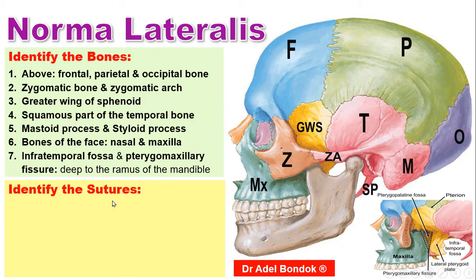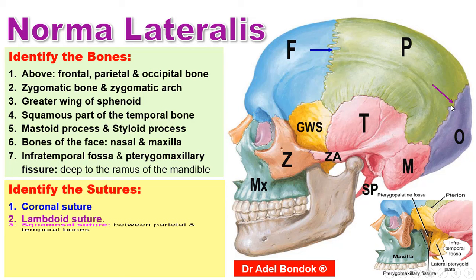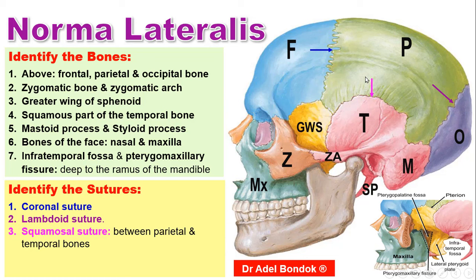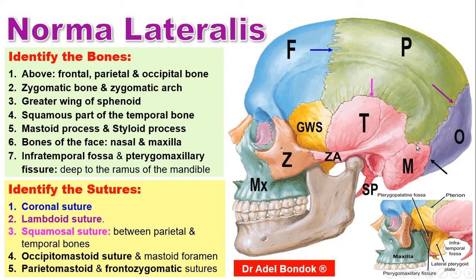Regarding the sutures of Norma lateralis: the coronal suture between the frontal and parietal, the lambdoid suture between the parietal and occipital, the occipitomastoid suture, the parietomastoid suture, and the fronto-zygomatic suture.